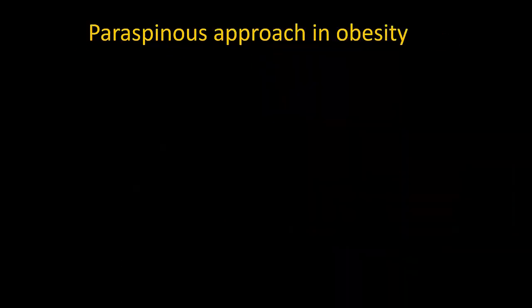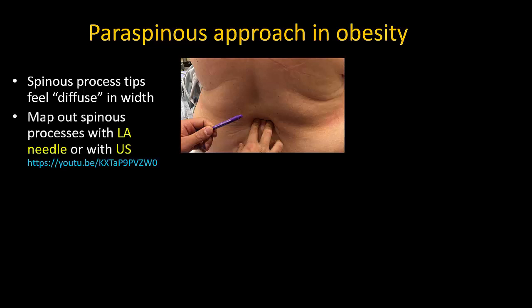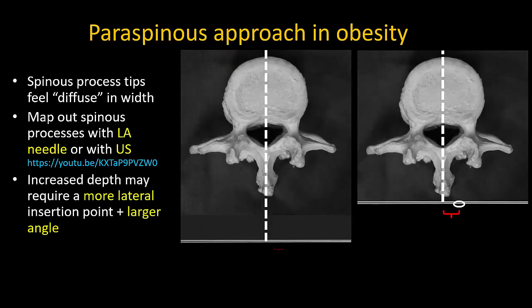In the obese patient, the tips of the spinous processes are harder to palpate and often feel wider and more diffuse in their contours due to increased overlying soft tissue. Compression of the soft tissues with the two palpating fingers often allows the spinous processes to be reached with the local infiltration needle, which can be used to map out the location and contours of the spinous process tips by feel. Alternatively, ultrasound imaging can be used. The needle should be inserted lateral to the perceived lateral border of the spinous process, but this may be more lateral than usual, with the lateral to medial angle closer to 10 to 15 degrees rather than 5 to 10 degrees.